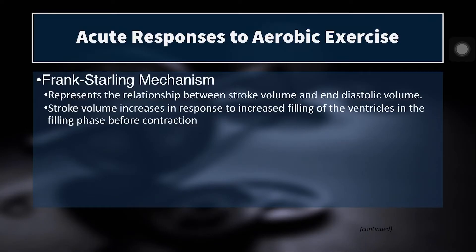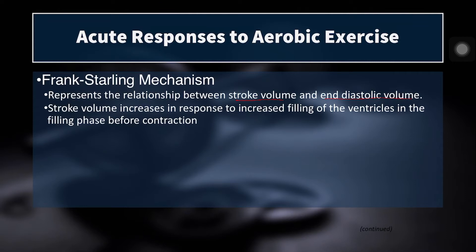Your heart accomplishes this partially through what's called the Frank-Starling mechanism. The Frank-Starling mechanism represents the relationship between stroke volume and end diastolic volume. End diastolic volume is the amount of filling that takes place in the heart at the end of the relaxation phase. Systolic is when the heart pumps and squeezes; diastolic is when the heart relaxes and fills with blood. The more blood it fills with, the greater the end diastolic volume, the more pre-stretch is put on the musculature, and the harder the heart can pump. So stroke volume increases in response to increased filling of the ventricles before contraction.